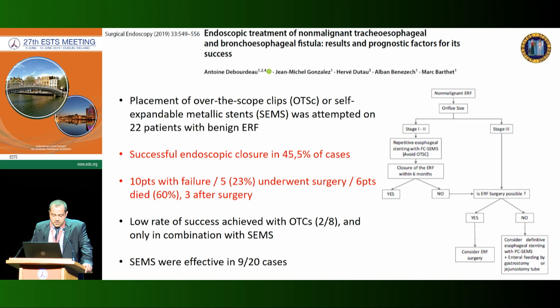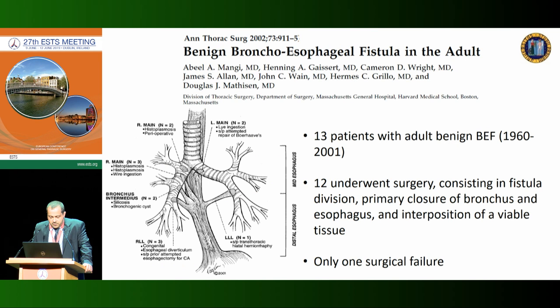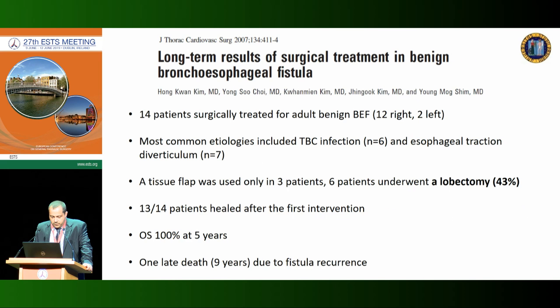There are not many surgical series reported in the literature. The group from Mathisen and Grillo reported in 2002, 13 patients with adult benign fistulas from different etiologies. Patients underwent surgery through a thoracotomy approach with fistula division, direct suture of the bronchus, double-layer suture of the esophagus, and always interposition with viable tissue — reporting only one surgical failure. In 2007, Kim's group reported 14 patients with adult benign fistulas, mainly related to tuberculosis or esophageal traction diverticula. Notably, 43% of cases required associated lobectomy, which the authors concluded contributed to their very good results by preventing postoperative pneumonia and long-term complications.